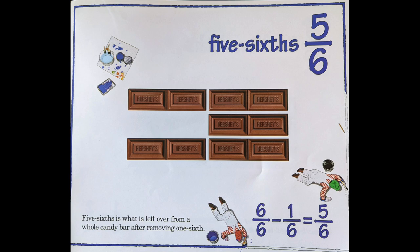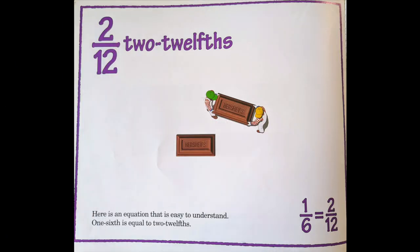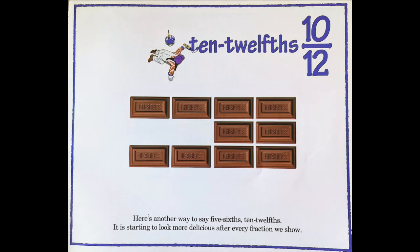Five sixths is what's left over from a whole candy bar after removing one sixth. Here is an equation that is easy to understand: one sixth is equal to two twelfths. Ten twelfths is another way to say five sixths.